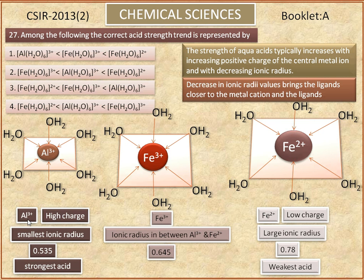In Fe 3+ complex, even though it has similar charge to Al 3+, its ionic radius is higher than Al 3+ but lesser than Fe 2+. So its acidity also lies in between Al 3+ and Fe 2+.